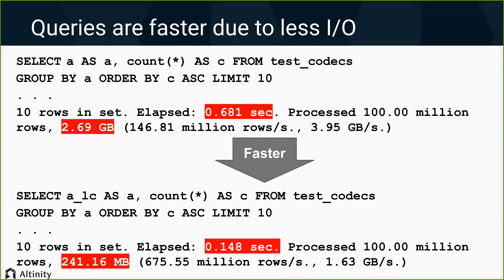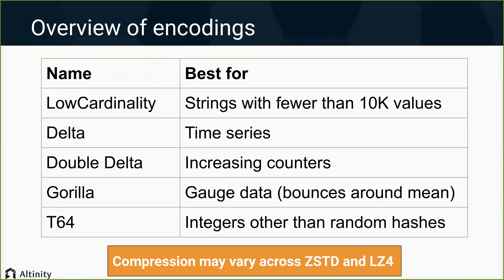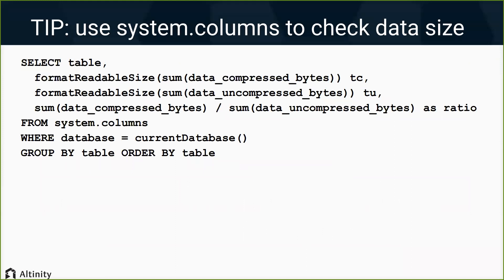I'm proud to say Altinity contributed a couple of these encodings — DoubleDelta and Gorilla. When you're playing around with encodings, use the system.columns table. This is another incredibly useful table that will show you the level of compression you're getting. Rather than just query logs, in system.columns you can directly see what encodings were applied, how much compression you got, and as you play around with it you can see the differences very easily.